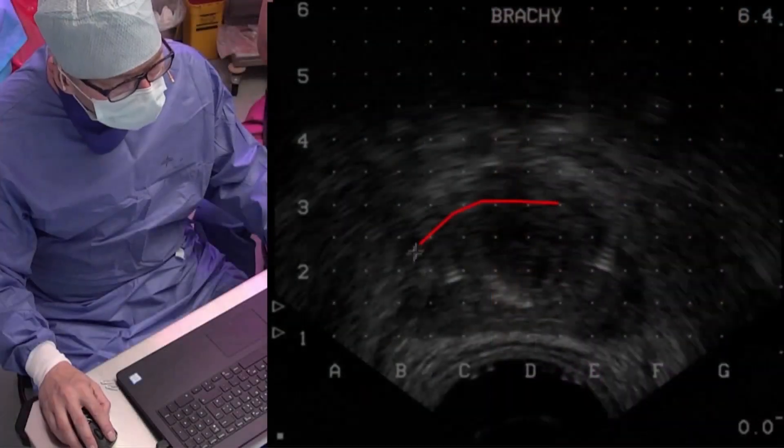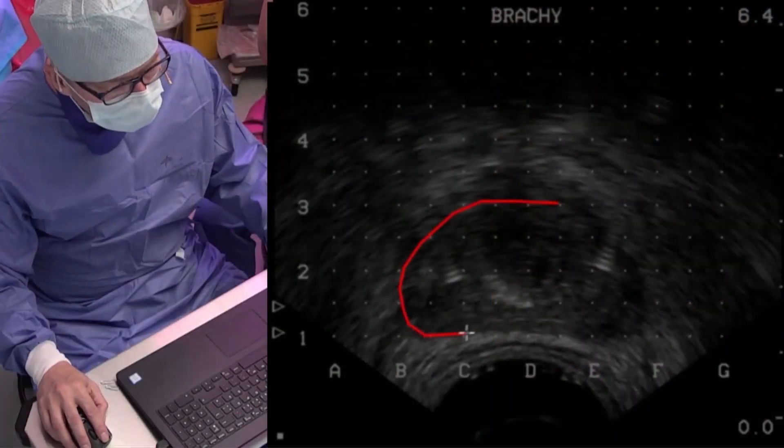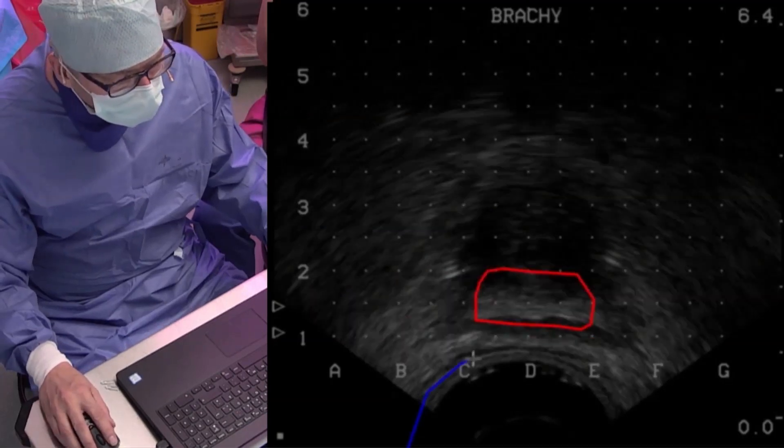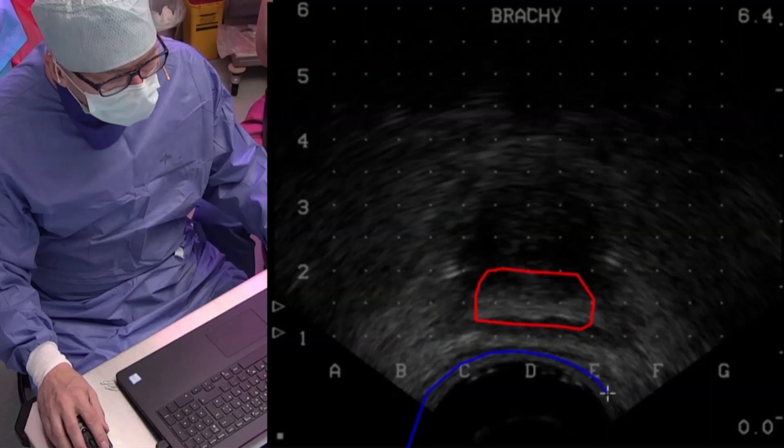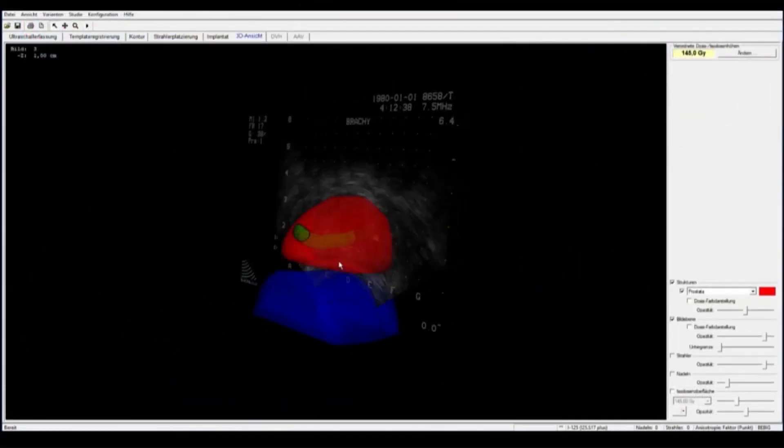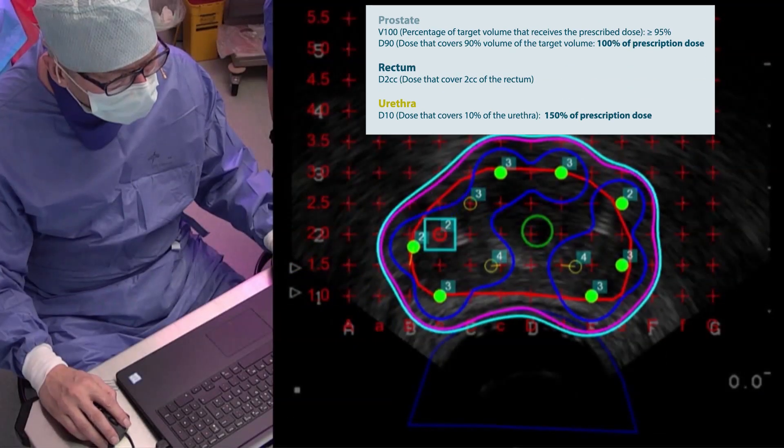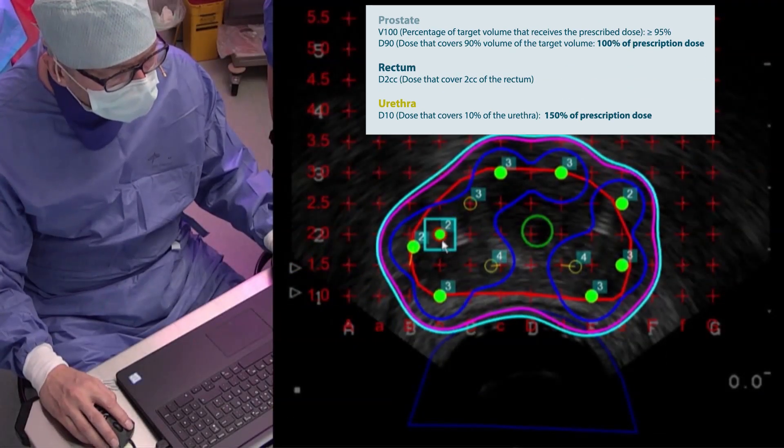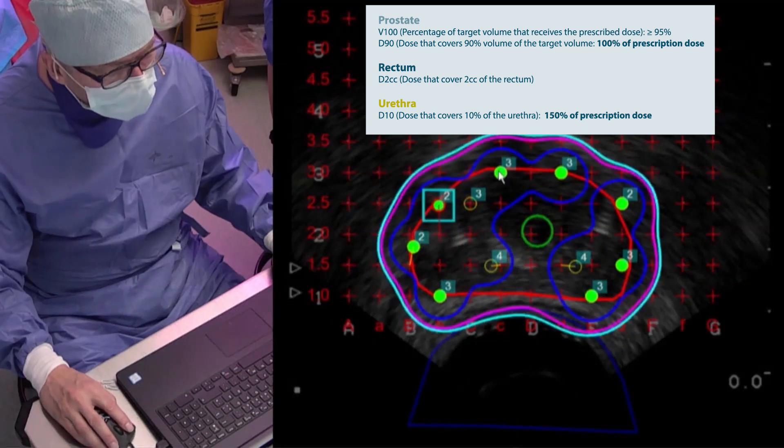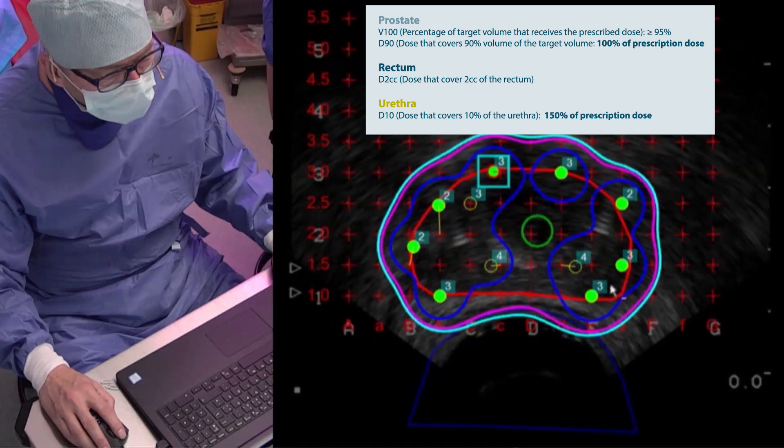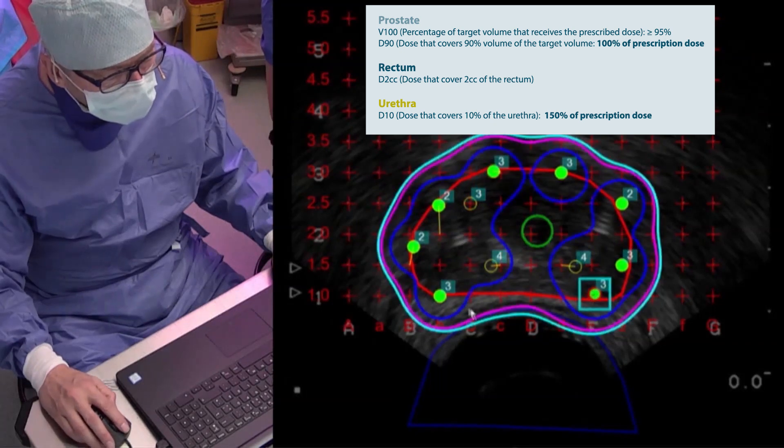With the help of the ultrasound images, the physician can determine the exact contours of the prostate and the surrounding regions. Based on the determined size and shape of the prostate and adjacent organs, the physician can now calculate the exact number of seeds required and their optimal positions within the prostate with the help of the treatment planning software.